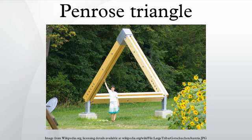The tribar appears to be a solid object made of three straight beams of square cross-section, which meet pairwise at right angles at the vertices of the triangle they form. The beams may be broken, forming cubes or cuboids.